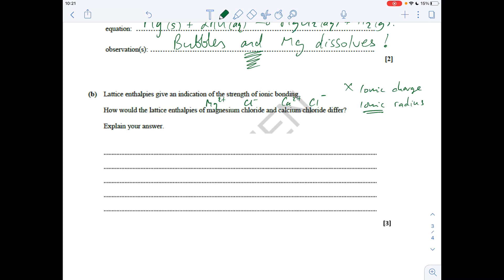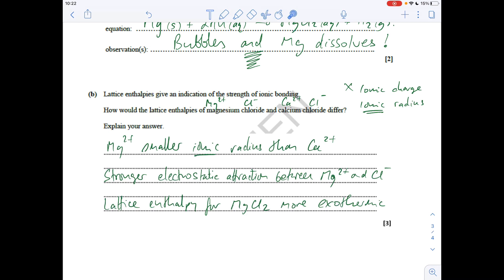So in magnesium chloride, you've got a smaller ionic radius for the Mg2+. You'll therefore have stronger electrostatic attraction between the oppositely charged ions in magnesium chloride. And therefore, its lattice enthalpy would be more exothermic. So you could literally just write three statements like I've done here. Mg2+ has a smaller ionic radius than Ca2+. There's a stronger electrostatic attraction between the Mg2+ and Cl- ions. So therefore, the lattice enthalpy for MgCl2 is more exothermic.